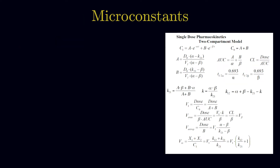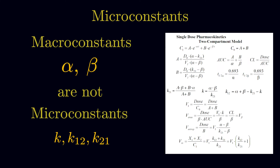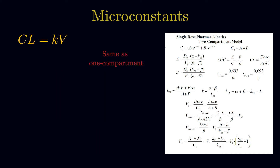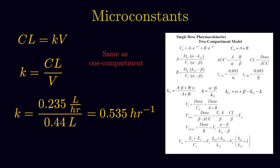Next, we want to find the value of the microconstant K governing the first-order elimination process from the central/plasma compartment. It's important to understand that macroconstants alpha and beta do not equal any of the microconstant K's — they represent the overall effects of the microconstants. So, using clearance equals K times V, rearranged to K equals clearance over volume: 0.235 divided by 0.44 gives K equal to 0.535 per hour.